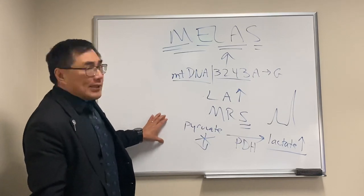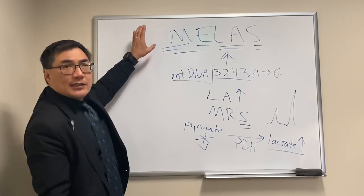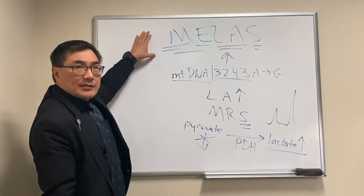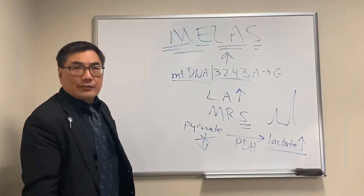And it can present to us in any of a myriad of ways that are mitochondrial: vision loss, hearing loss, cardiac disease, kidney disease, because the highly metabolic tissues are more susceptible to mitochondrial disease.